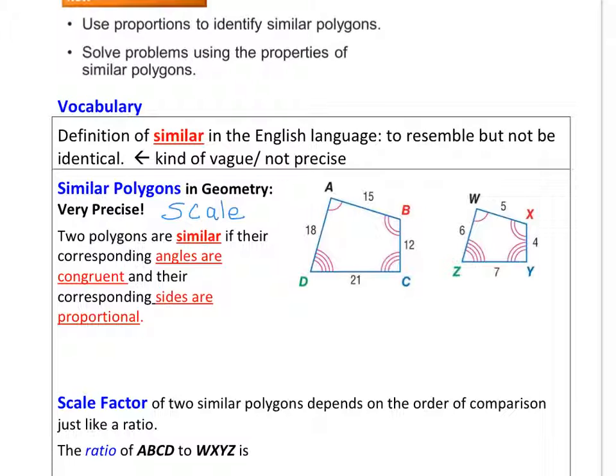So AB, it's between the single and the double arc, and what's between the single and the double arc in the smaller quad, that would be WX. So AB is to WX as, and this is how we read proportions, BC is to, well BC is between the double and the triple, and in the smaller guy, the double and the triple is XY.